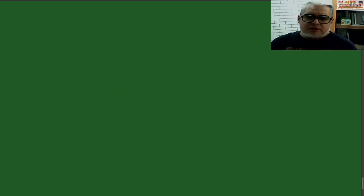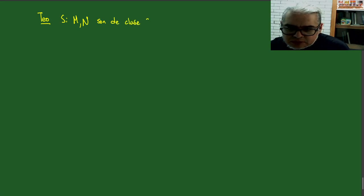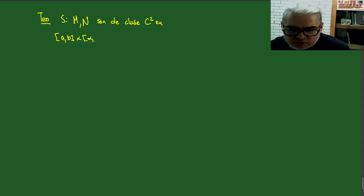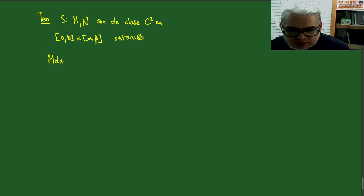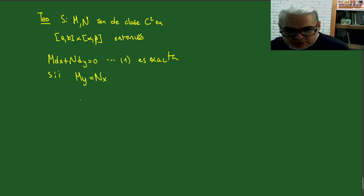El resultado dice que si M y N son de clase C² al menos en un rectángulo de la forma (a,b) × (α,β), entonces la ecuación M dx + N dy = 0 es exacta si y sólo si la parcial de M respecto de y es igual a la parcial de N respecto de x.